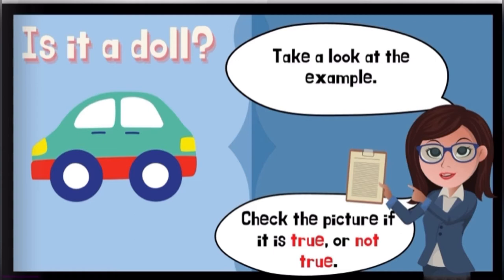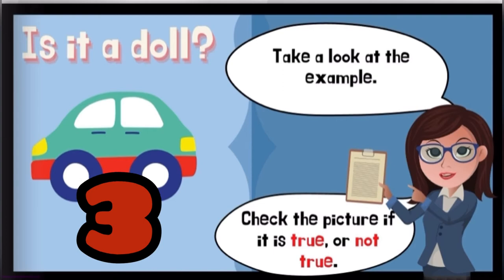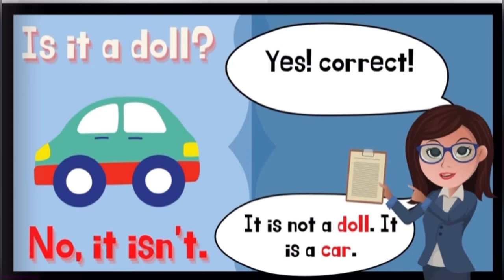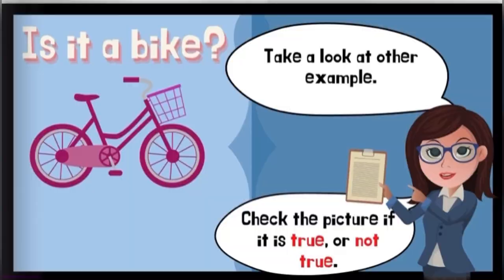Take a look at the example. Check the picture if it is true or not true. Is it a doll? Yes, correct. It is not a doll. It is a car. No, it isn't.